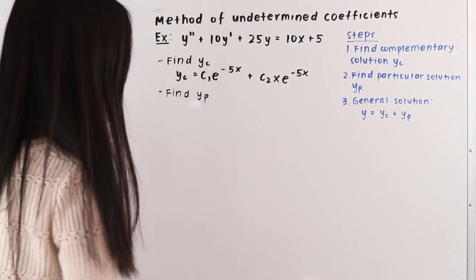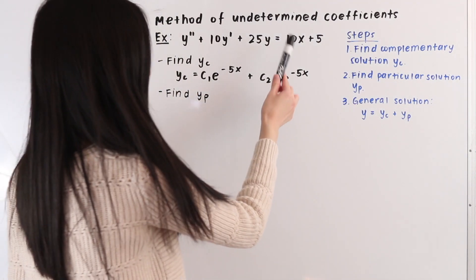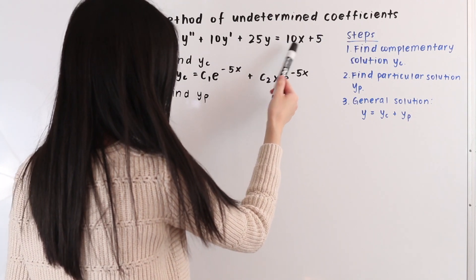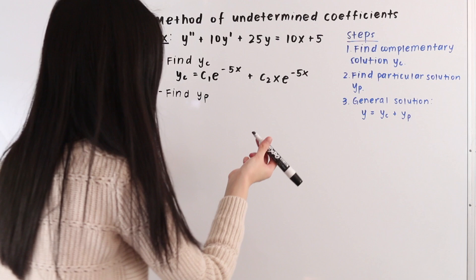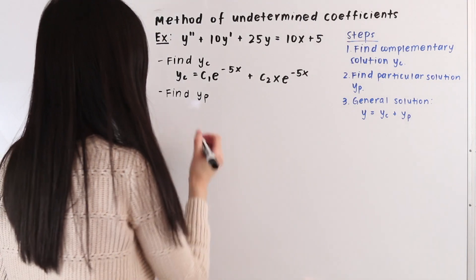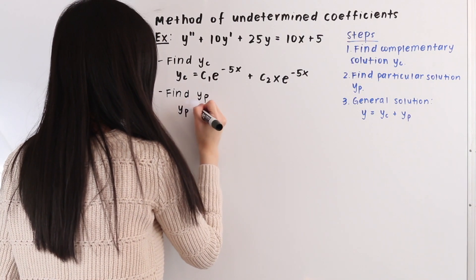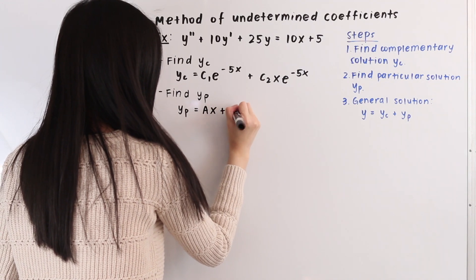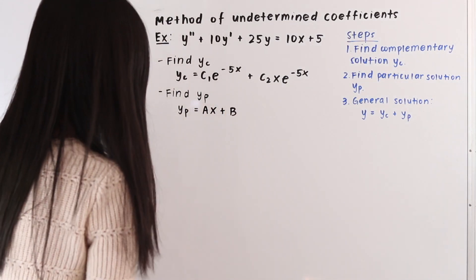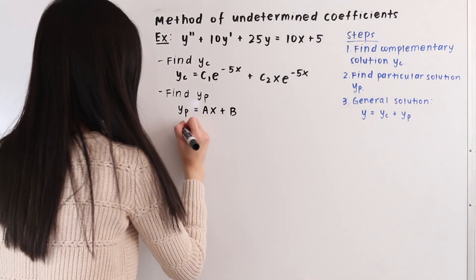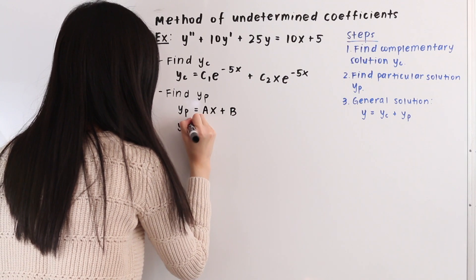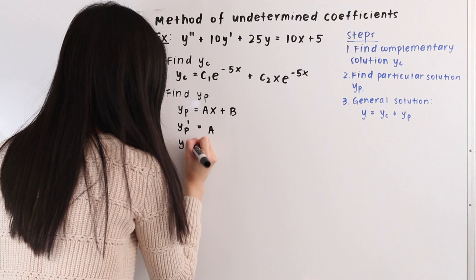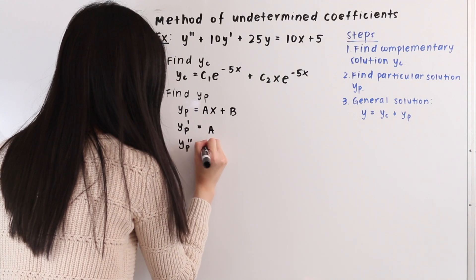In step two we are going to find our particular solution. We take a look at the right hand side of our differential equation and note that we have some constant times x plus another constant. So we assume yp is equal to ax plus b. From here we take its first and second derivatives: yp prime is equal to a, and yp double prime is equal to 0.